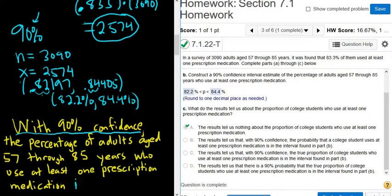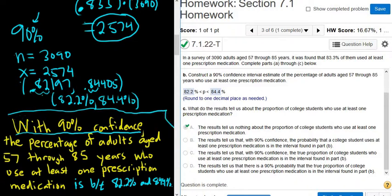Then you just say is between. So is between. Then you go to your answer. So 82.2% and 84.4%. So again, to do a correct interpretation of a confidence interval, always start by saying the level of confidence. So with 90% confidence, with 95% confidence. Then go to the last sentence. So usually starting with the word the, the percentage of adults aged 57 through 85 years who use at least one prescription medication. Then you say is between. And then you go to your answer. So what does this mean?